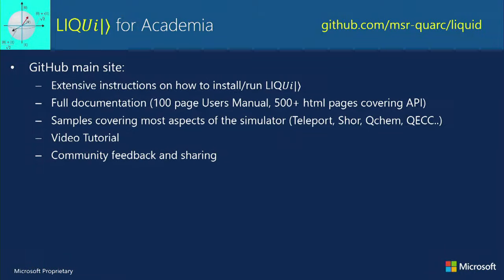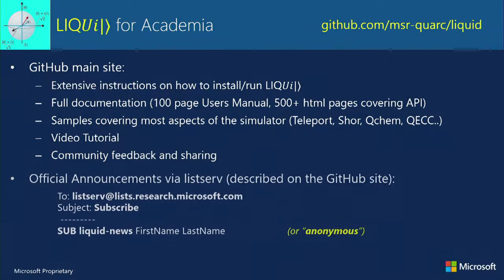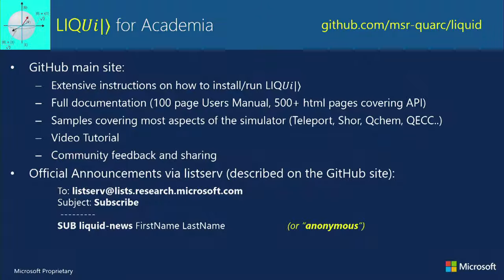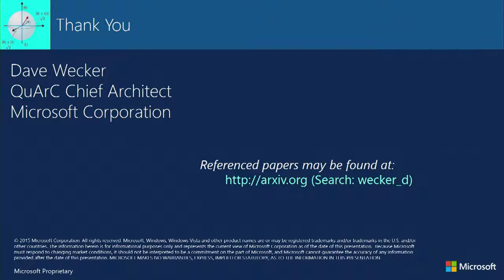This is how you get LIQUi|⟩. There's a GitHub site with extensive instructions on how to install and run it: full documentation, a 100-page user manual, 500+ pages of API docs, samples covering almost everything you've heard today including teleport, Shor, quantum chemistry, and quantum error correction. There's a video tutorial walking you through writing code. There's community feedback and sharing — people are welcome to contribute. The site asks you to sign up for the listserv — I ask that you do, mainly because that's how I justify the project and get headcount. You can also go to arXiv and search for Wecker_D to find all the papers we've written using LIQUi|⟩. Thank you very much.